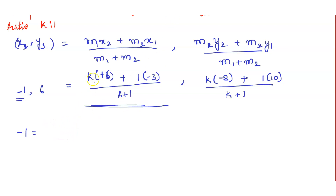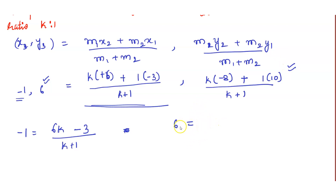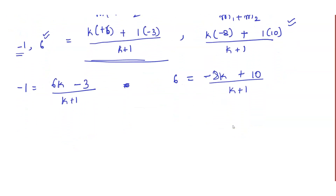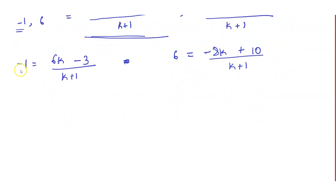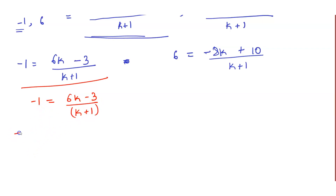Since the dividing point is (-1, 6), we substitute x3 = -1 and y3 = 6. So -1 = (6k - 3) / (k + 1). Cross-multiplying: -(k + 1) = 6k - 3.